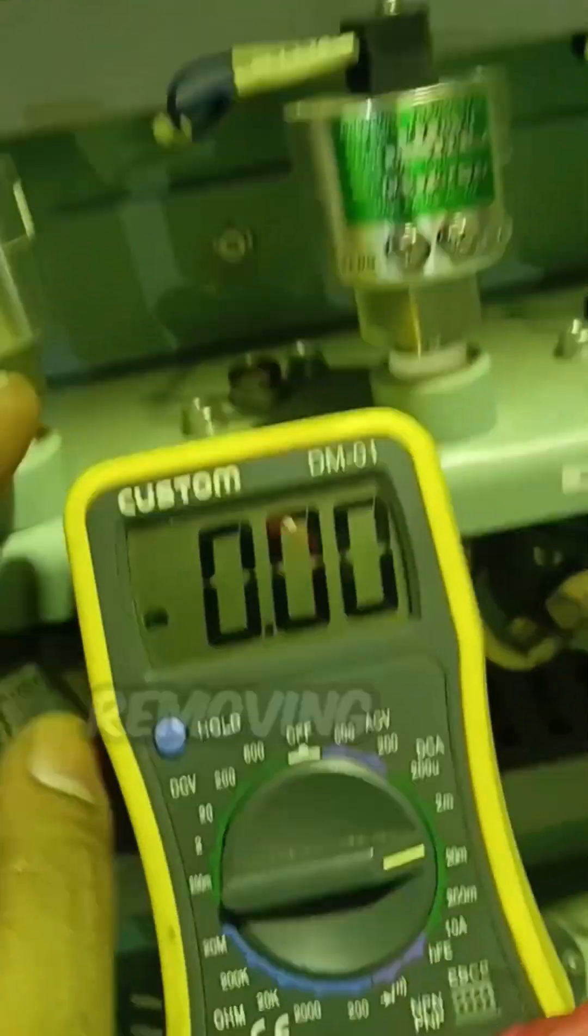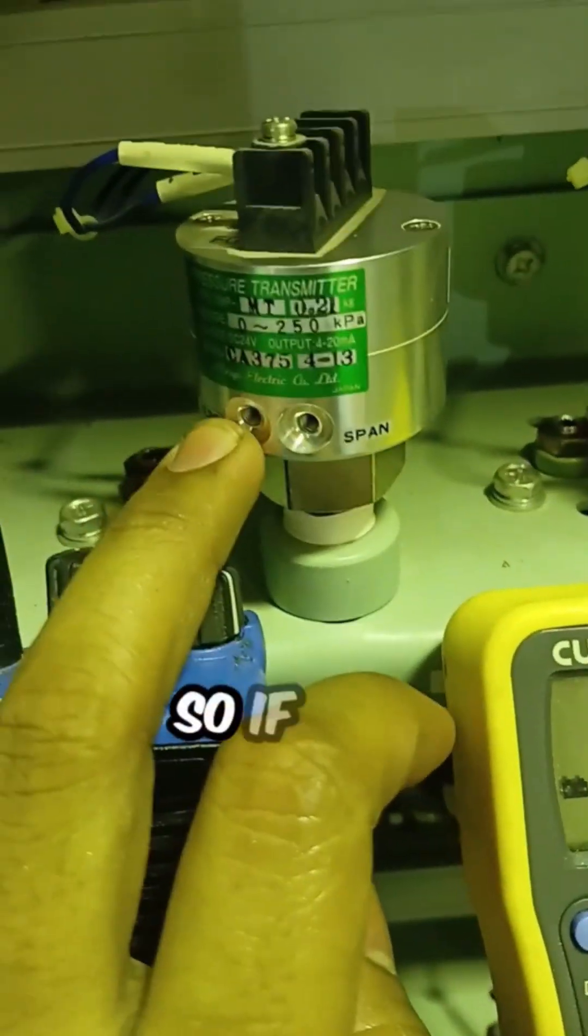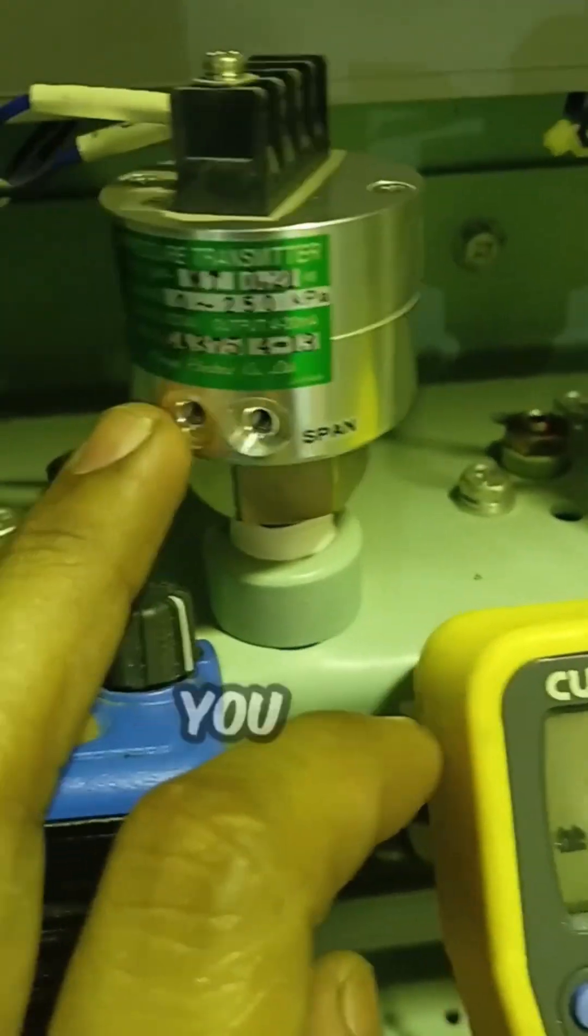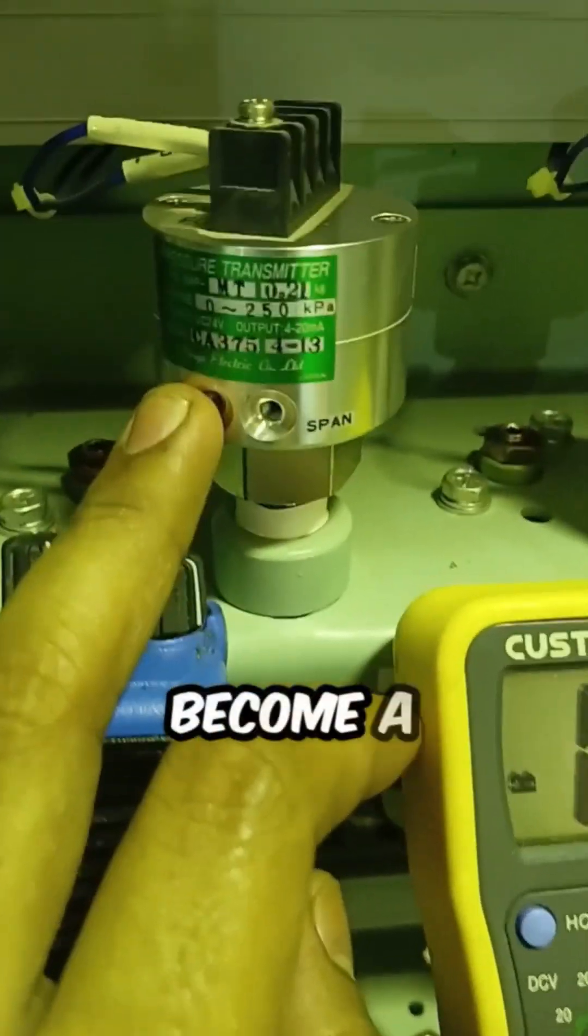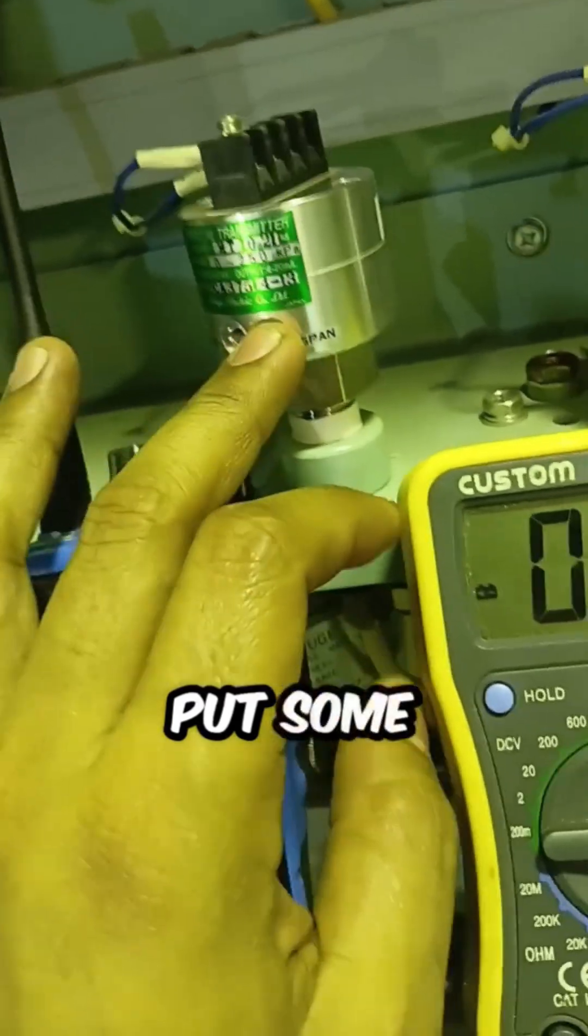So at zero pressure, like while removing the pressure, you will get 4 milliamp. So if not get 4 milliamp, like before you get 3.5, you can adjust and make sure you become 4 milliamp. So you can put some pressure,